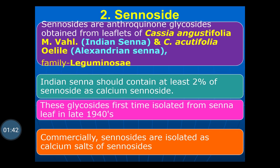Sennosides belong to the category of anthraquinone glycosides. These glycosides are compounds which on hydrolysis — either acid or enzymatic hydrolysis — give the glycon and aglycon moiety, that is the sugar and non-sugar moiety. The non-sugar moiety has therapeutic utility. Indian Senna should contain at least 2% of sennoside as calcium sennoside. This glycoside was first isolated from the Senna leaf in the late 1940s.